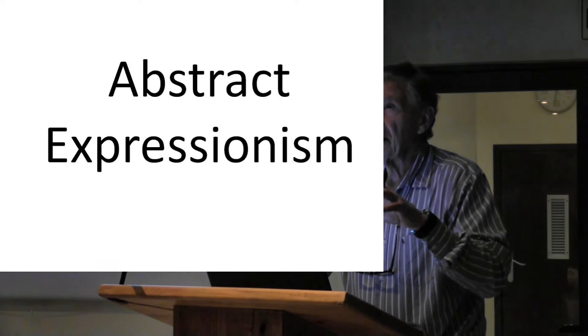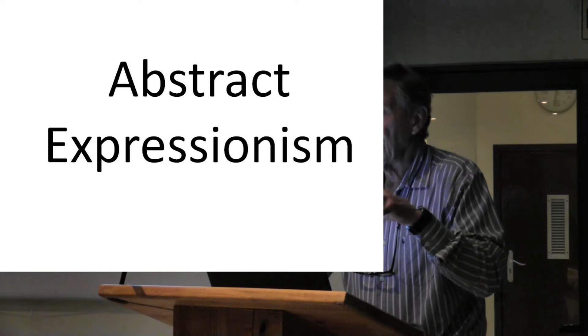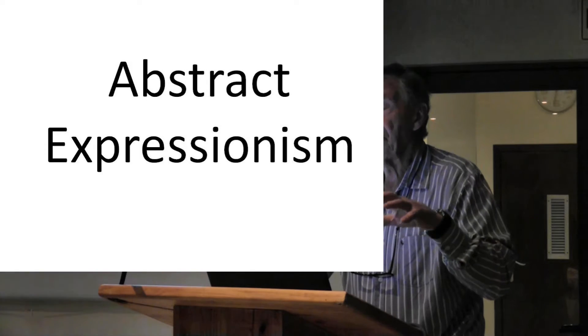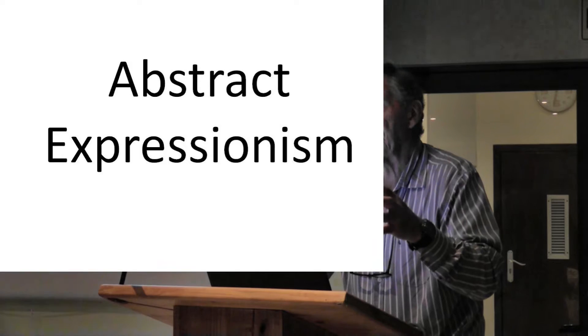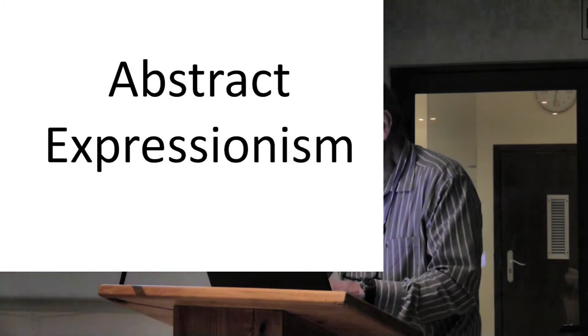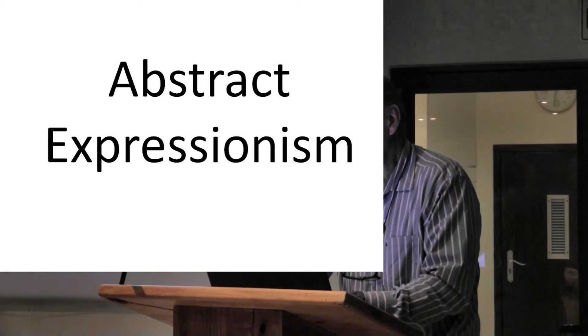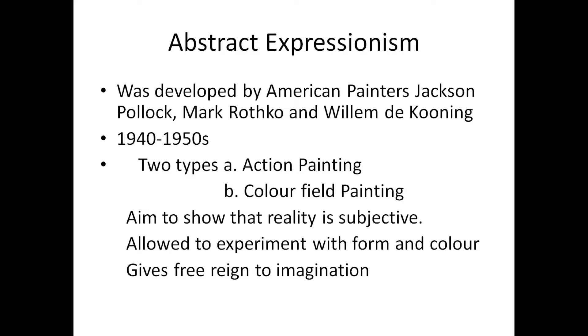Then we started having Abstract Expressionism. What happened at this stage is that the European schools were no longer as important — the whole group went to the United States. Abstract Expressionism began in England but was later developed by the American painters Jackson Pollock, Mark Rothko, and Willem de Kooning in the 1940s and 1950s. They had two types: action painting and colour-field painting.